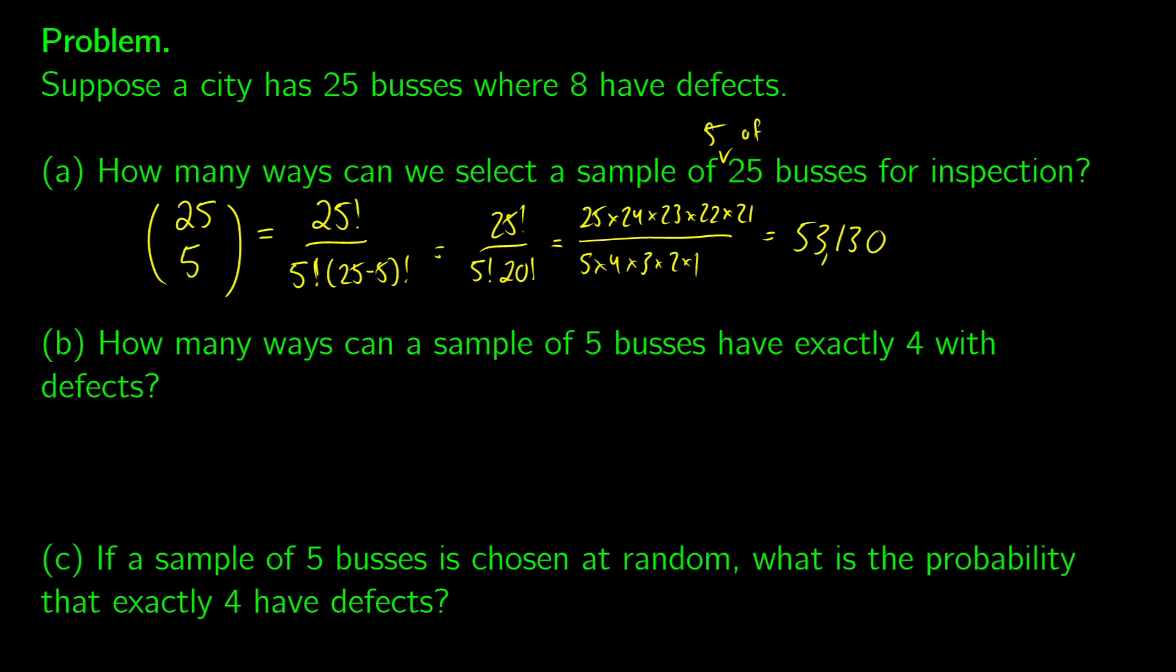So in part B, how many ways can a sample of five buses have exactly four defects? So this problem is a little bit more interesting. And here's the ideology behind figuring this out. So eight have defects. And what we want to do is we want to choose four of those. 17 don't have defects. And what we want to do is we want to choose one of those. Now, these are independent events.